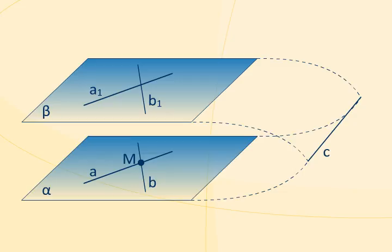Similarly, the plane alpha passes through the line B. The line B is parallel to the plane beta. Alpha intersects beta along the line C. Thus, the line B is parallel to the line C. We've concluded that two lines passing through the point M are parallel to the line C. This is impossible, and it is a contradiction.